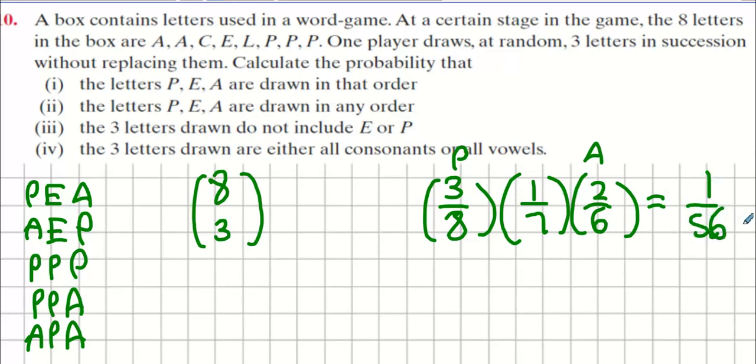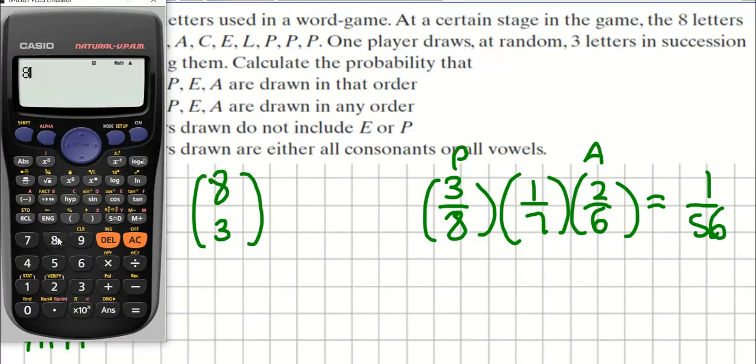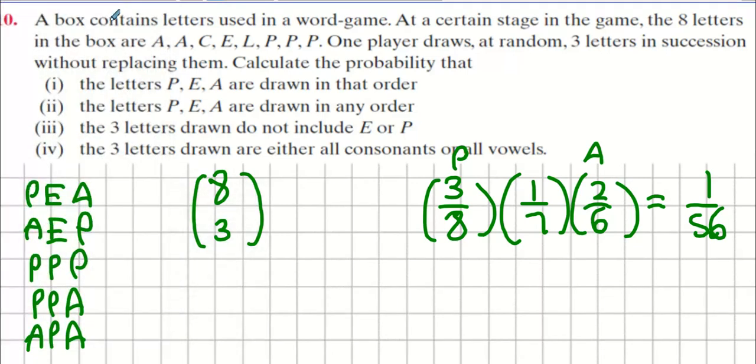Now, eight choose three. I'm just interested in eight choose three at the moment. Eight C three, fifty-six. Eight P three, three hundred and thirty-six. Interesting.